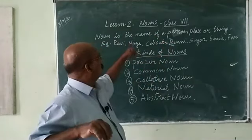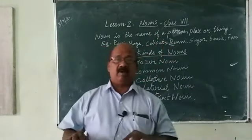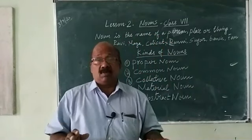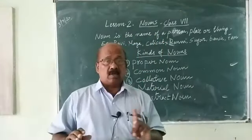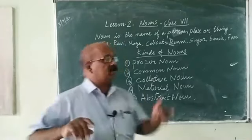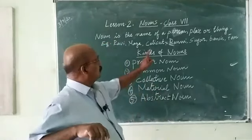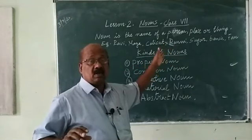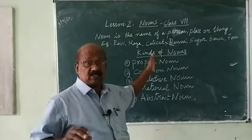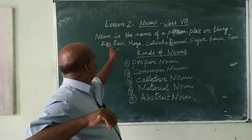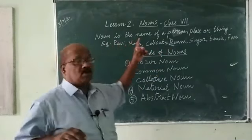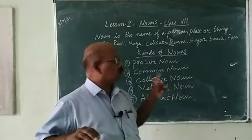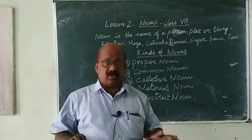So, what is meant by — what is a noun? Everybody knows, it's a simple definition. A noun is the name of a person, place, or thing. We learn these things in small classes. Nouns: the name of a person, name of a place, or name of a thing.